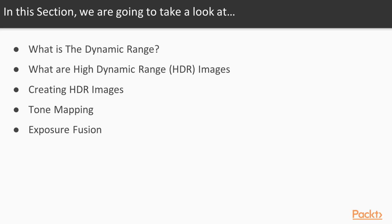Tone mapping is the process of taking a high dynamic range image and generating a low dynamic range image suitable for display. Exposure fusion is an alternative process for merging multiple exposure photos into a single pleasing low dynamic range image.